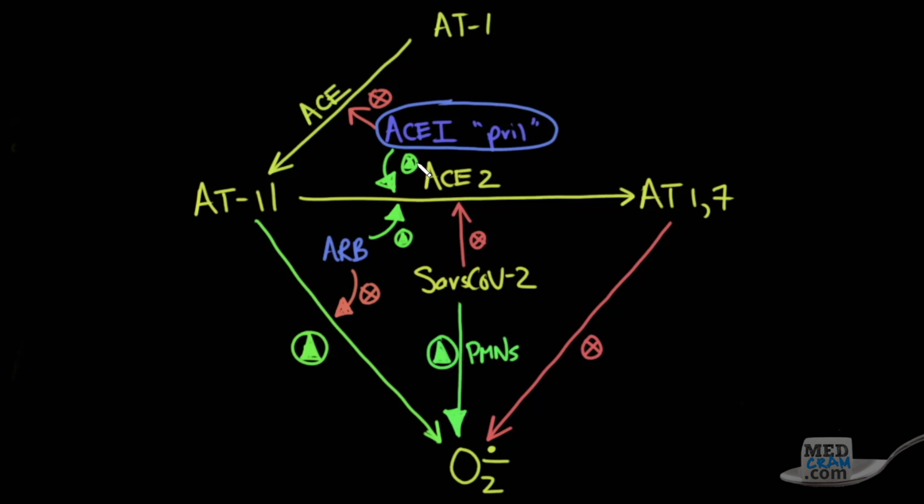The question for a long time would be, because ACE inhibitors increase the amount of ACE2, is that going to lead to more infections because there's more targets for SARS-CoV-2? In other words, how do ACE inhibitors or ARBs affect the ability to become infected with COVID-19, and the course of the disease itself?